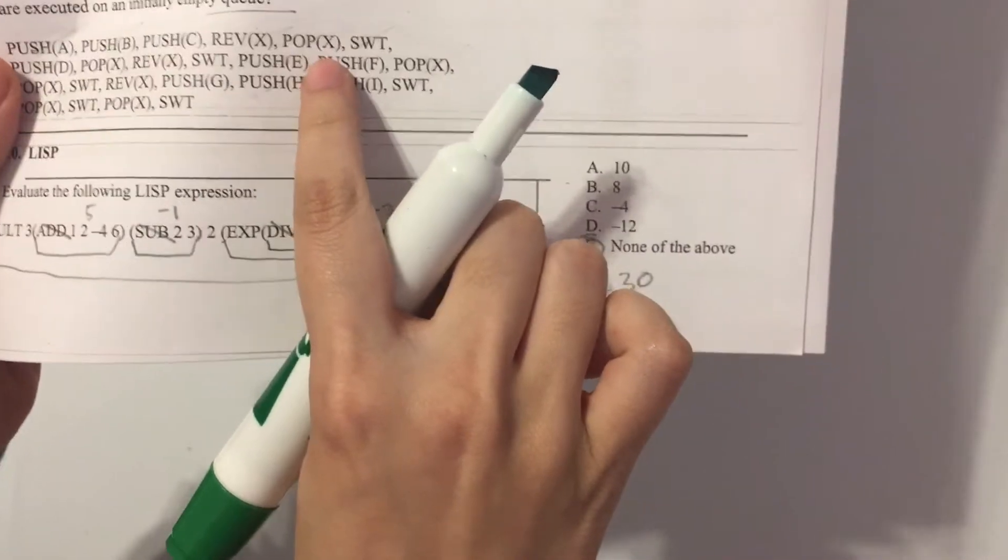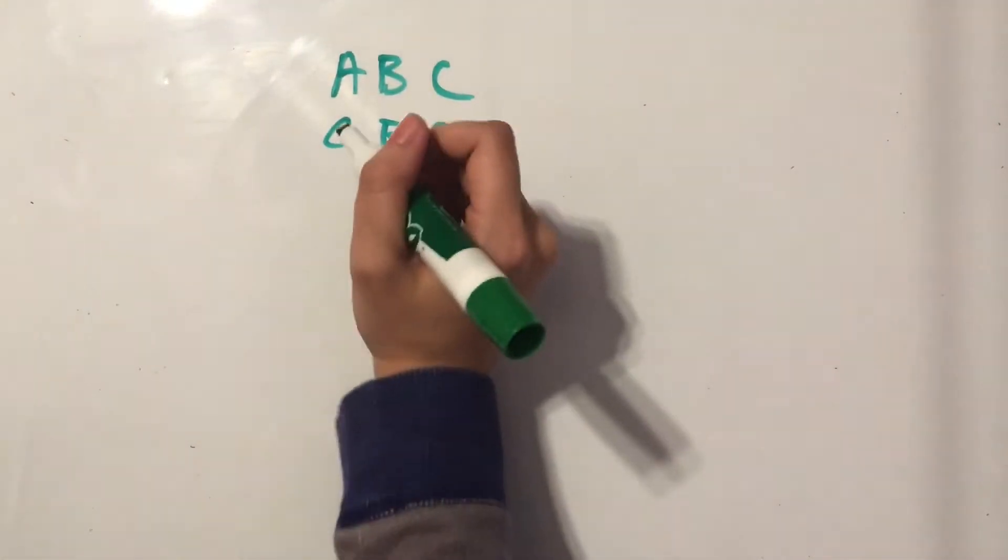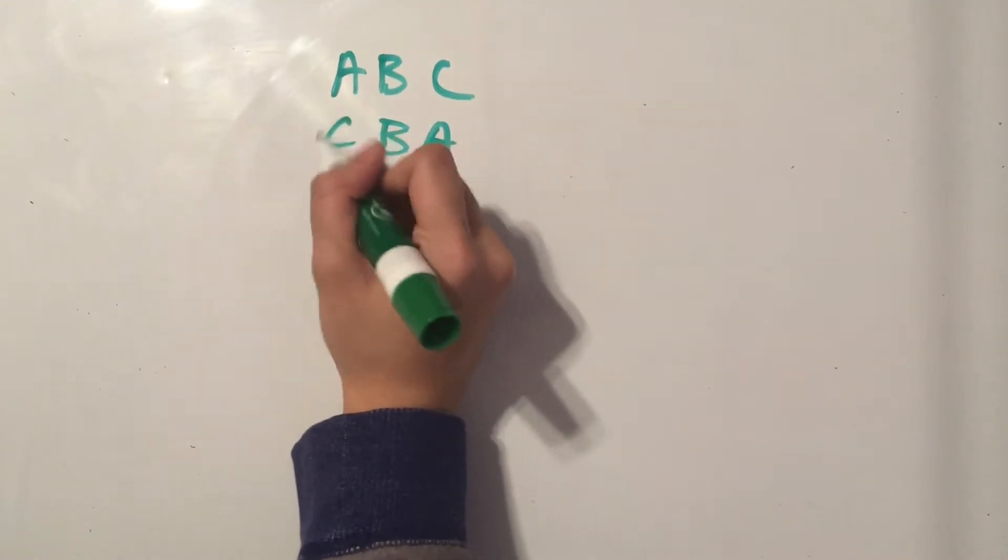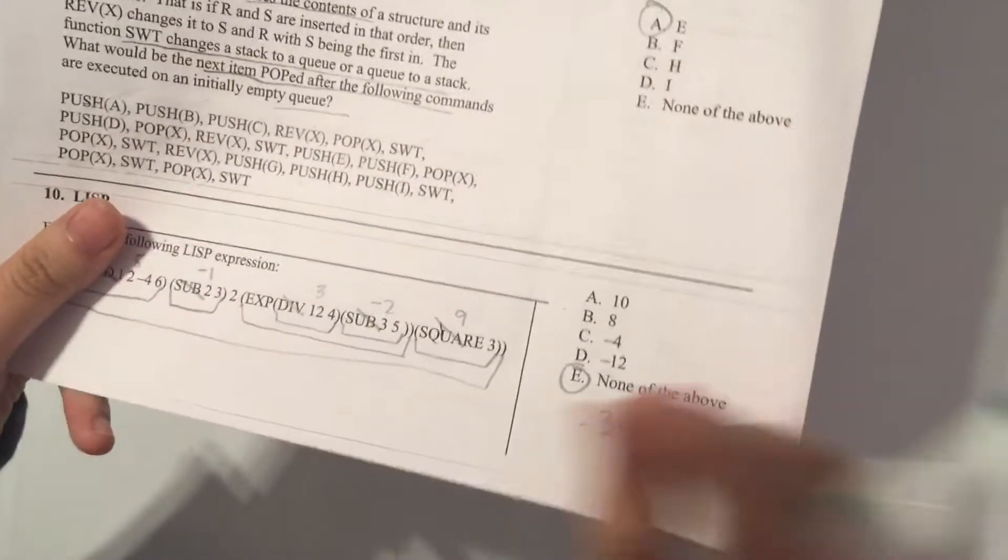Then we pop out the next thing. So remember in a queue, first come, first serve. So now C is in the first position, and we take out whatever's in the first position.